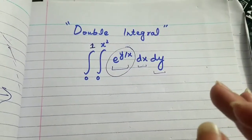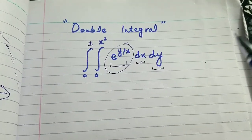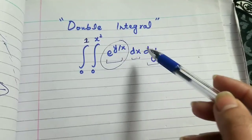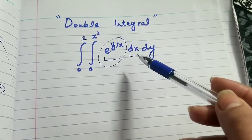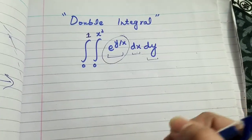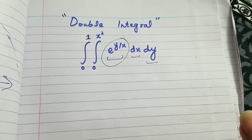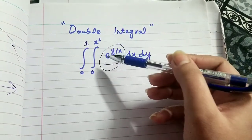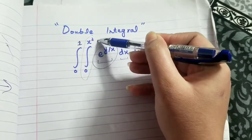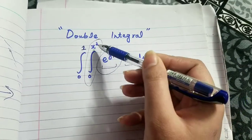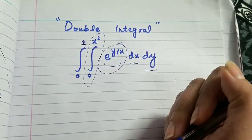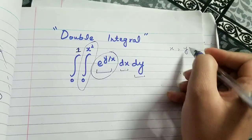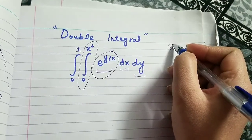First of all, you have to decide the order of integration. Order of integration means whether the function has to be integrated with respect to y first or with respect to x first. One way to determine the order of integration is to look at the limits given. Here we can see the first limit is expressed in terms of the x variable.